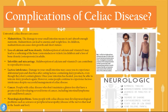What are the complications of celiac disease? Untreated celiac disease can cause malnutrition because the damaged small intestine cannot absorb enough nutrients, leading to anemia, weight loss, and in children slow growth and short stature. Malabsorption of calcium and vitamin D may lead to softening of the bone, presenting as osteomalacia and rickets in children and osteoporosis in adults. Malabsorption of calcium and vitamin D can also contribute to infertility and miscarriage.